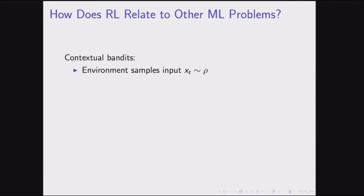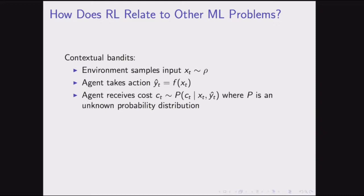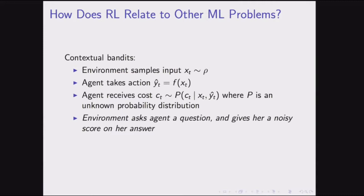Contextual bandits make the problem harder by giving the agent less information. Now the environment samples an input, but there's no correct output associated with it. The agent takes an action and receives a cost sampled from some unknown probability distribution. The environment asks the agent a question, the agent answers, and the environment gives it a noisy score. This has applications in personalized recommendations and advertising.